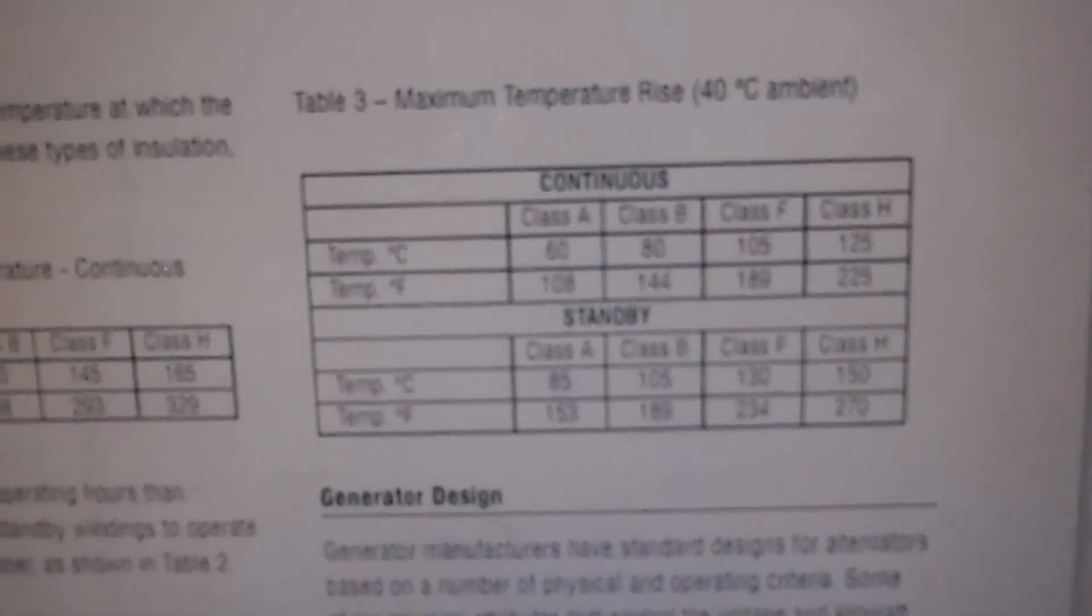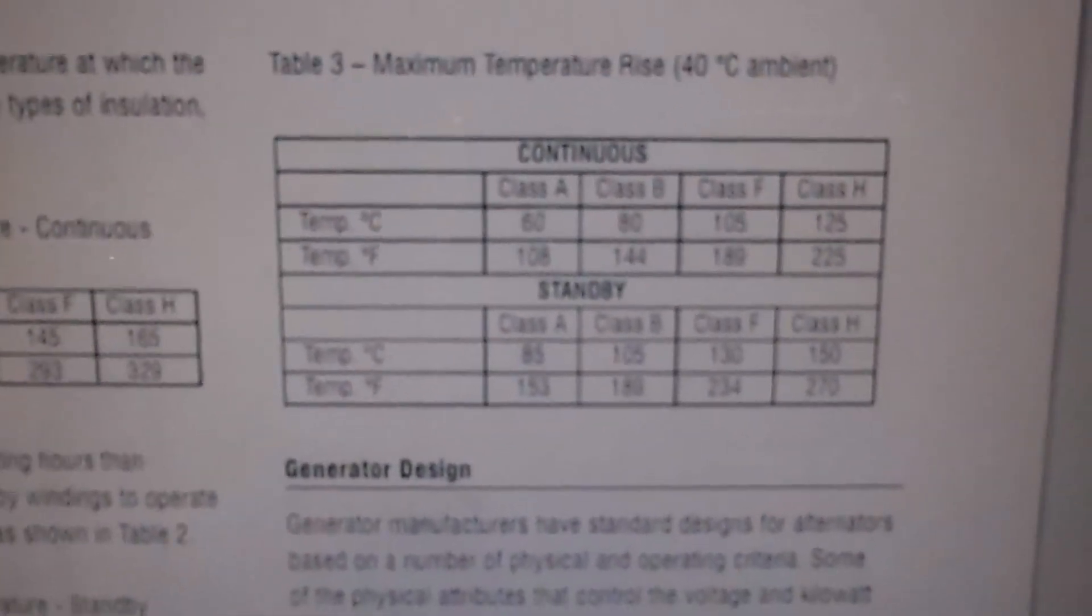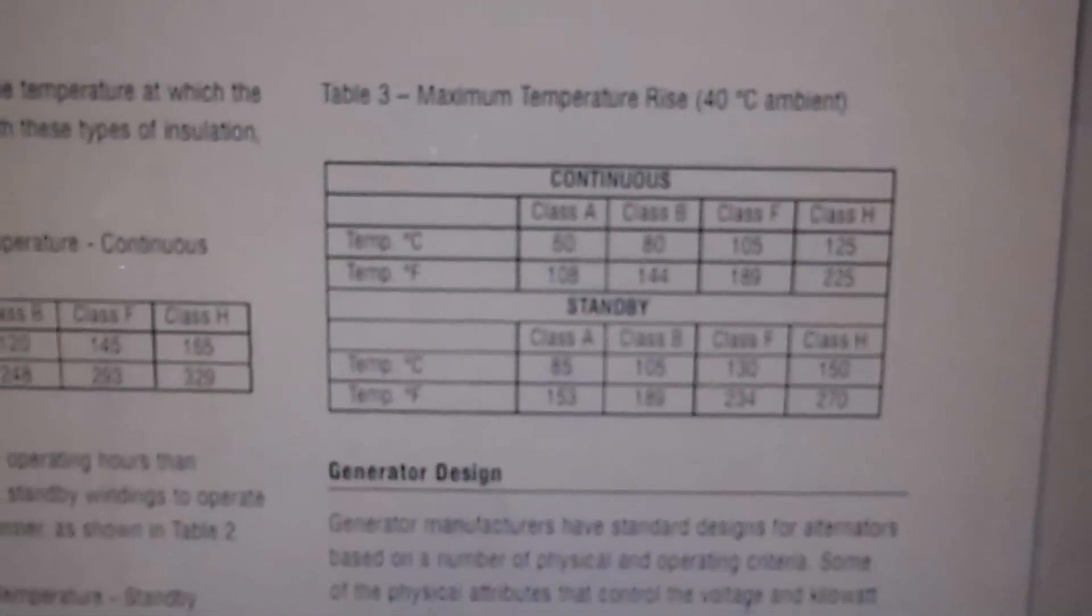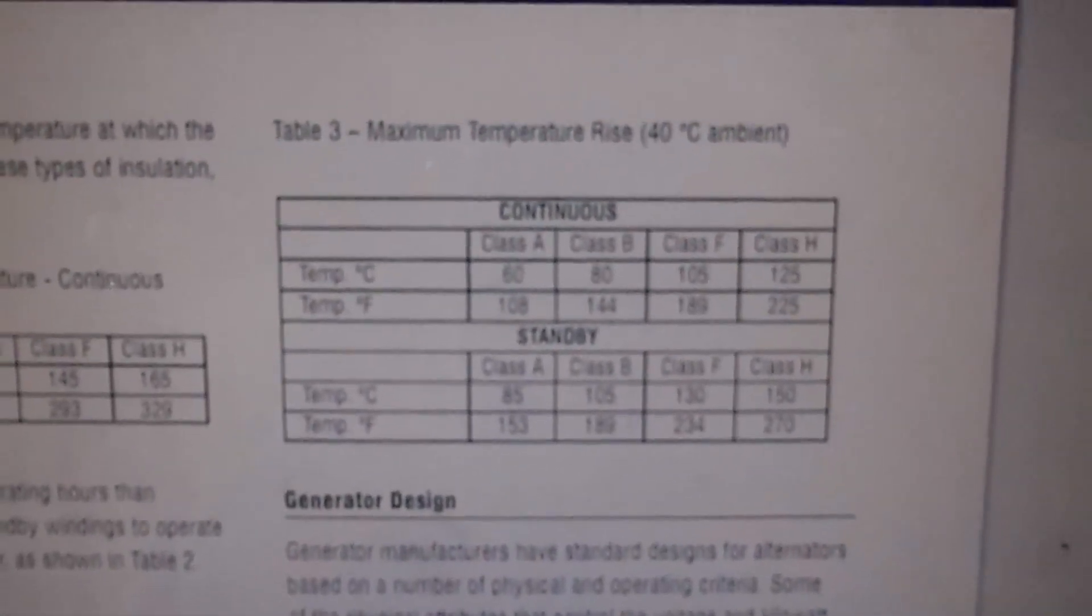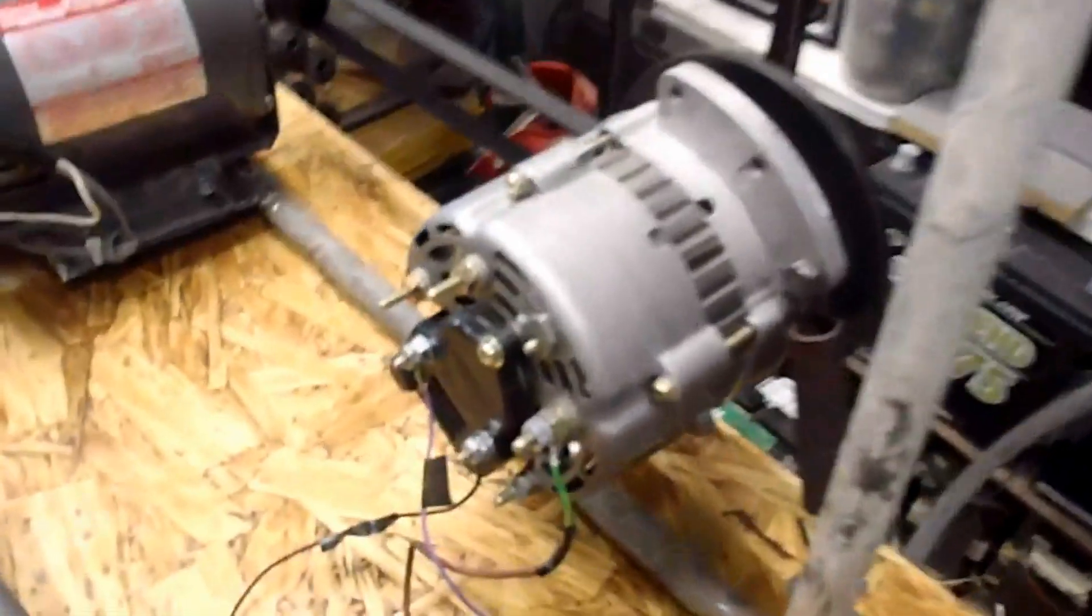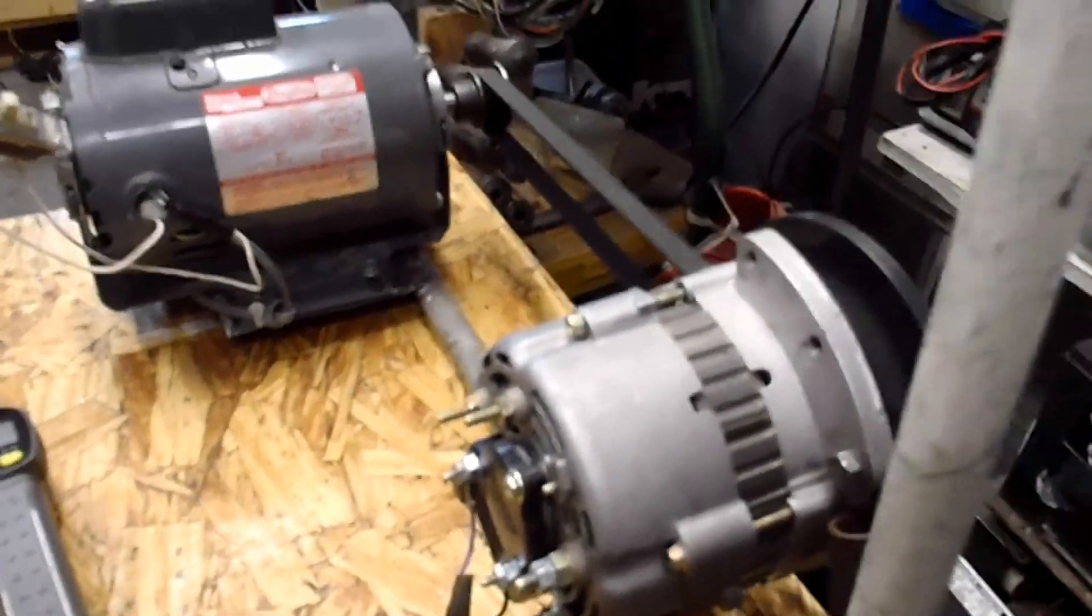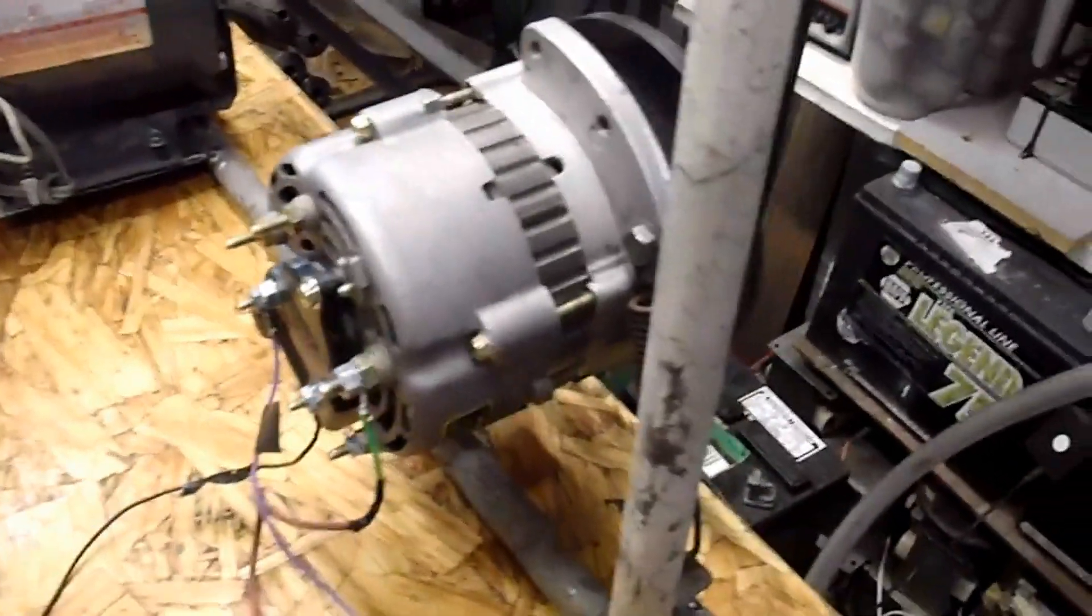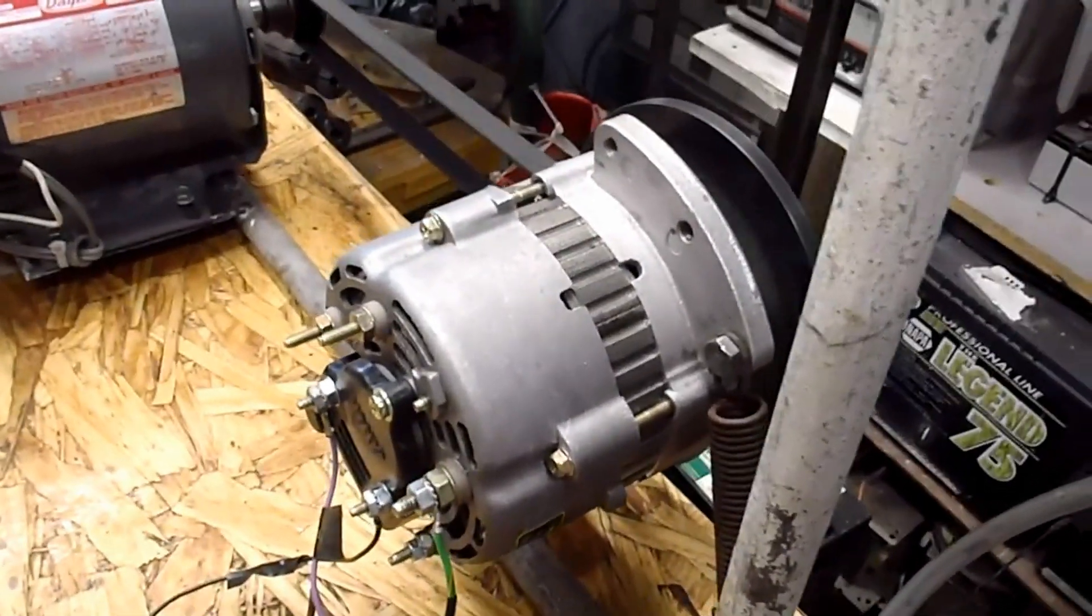Anyways, I'll just say Class A continuous they're saying is 108 Fahrenheit, B 144, F 189, and H 225 for continuous usage. I don't know what this alternator is rated at, I don't know what amps it's rated at, I don't know what class of wiring it has in it, so I really don't know when it's gonna die.